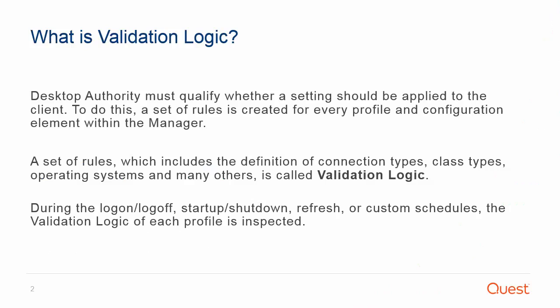In order for the profiles and configuration elements to be processed for users or computers, Desktop Authority must qualify whether a setting should be applied to the client. To do this, a set of rules is created for every profile and configuration element within the manager. A set of rules which includes the definition of connection types, class types, operating systems, and many others is called validation logic.